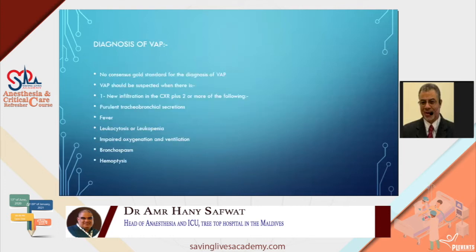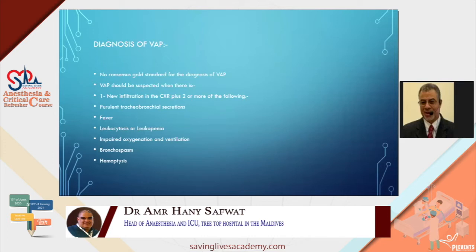There is no consensus gold standard for the diagnosis of VAP. It should be suspected in a ventilated patient with new infiltration on chest X-ray plus two or more of the following: purulent tracheobronchial secretions, fever, leukocytosis or leukopenia, impaired oxygenation or ventilation, bronchospasm, or hemoptysis. Lower respiratory tract microbiological sampling should be done for proper diagnosis and management.